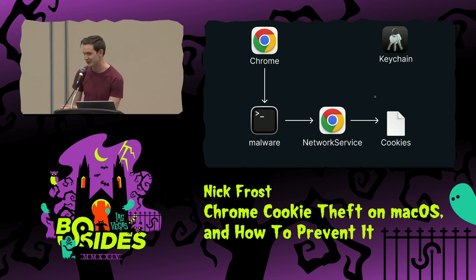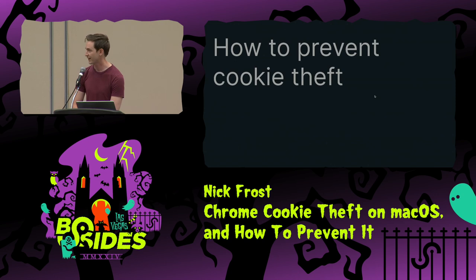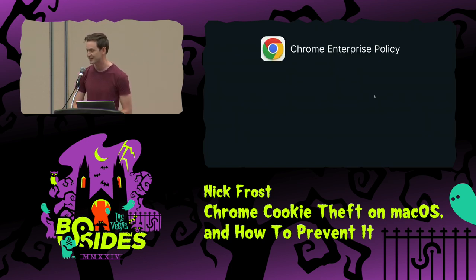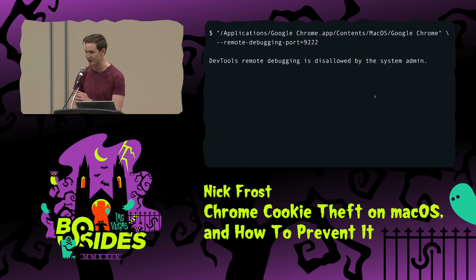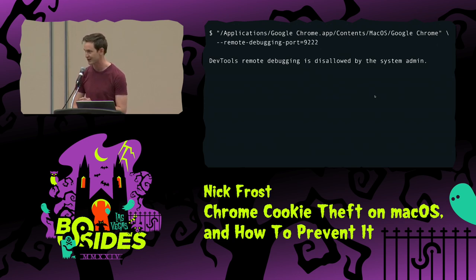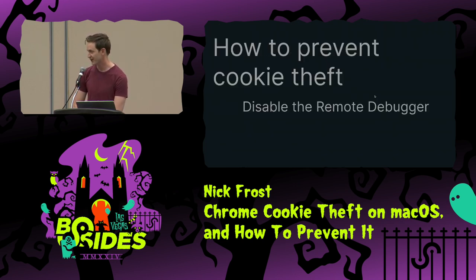And don't think about using file permissions to fix this, because the malware could just bring its own copy of Chrome, or download it from the internet. Even if it's not the same Chrome binary the user usually uses, it's still a signed copy of Chrome — it can still read the keychain and write to the cookie file. What can we do about this? The first thing: if you pay Google for Chrome Enterprise, there's a flag you can turn on to disable the remote debugger. When you set 'RemoteDebuggingAllowed' to false and try to launch Chrome with the remote debugger, it just prints an error message — it doesn't work. Everyone should turn this on. You might have trouble if you have engineers who use tools like Selenium, so you may just have to exempt them, or tell them to run Chrome with a different user data directory so that if someone manages to launch Chrome with the remote debugger, it's not getting the real cookies.